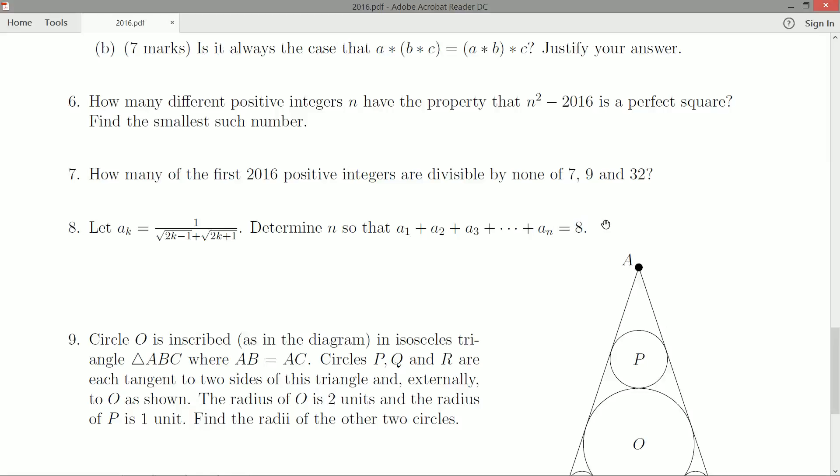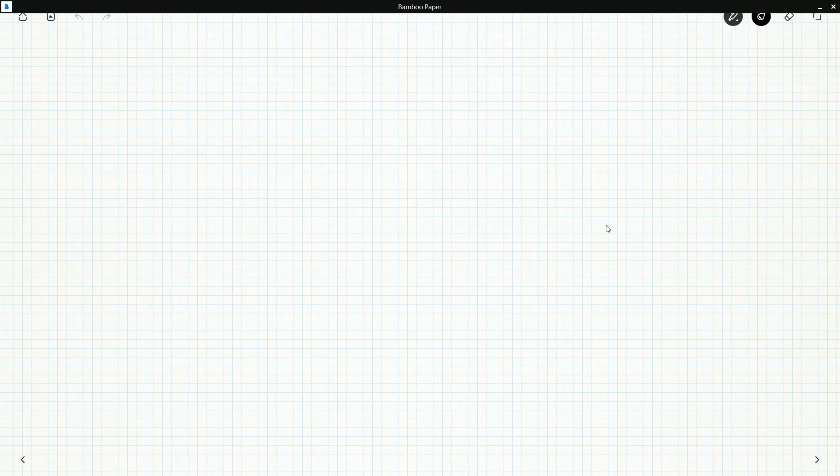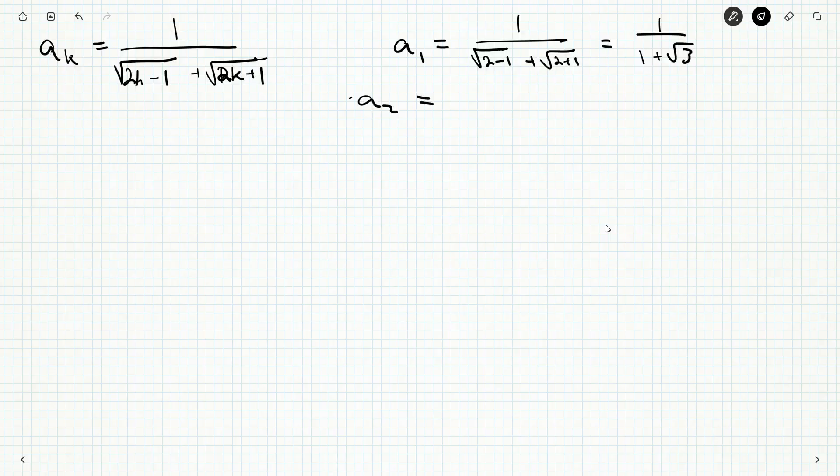So that's interesting. Let's take a closer look at a1, a2 and see if we can better understand these numbers here. So we'll grab our notepad. I'm going to copy down the formula. So if that's the case then a1 is 1 over root 2 minus 1 plus root 2 plus 1, which is 1 over 1 plus root 3. Not the nicest of numbers to work with, but that's okay.